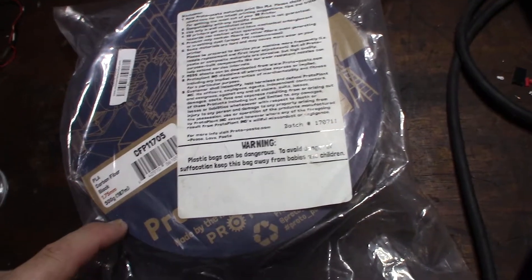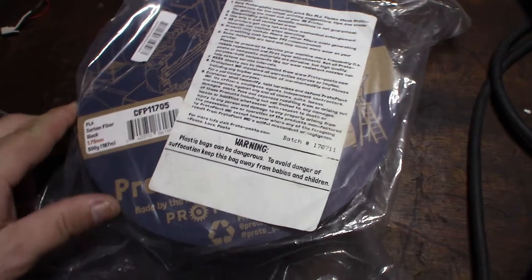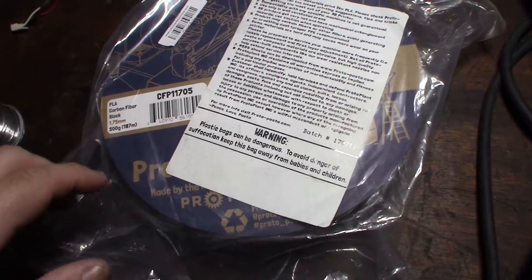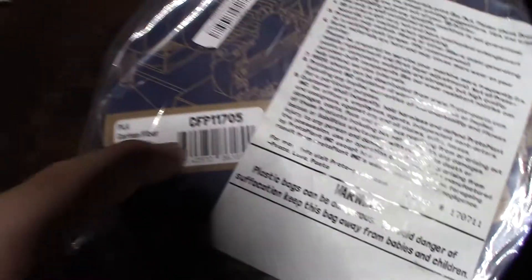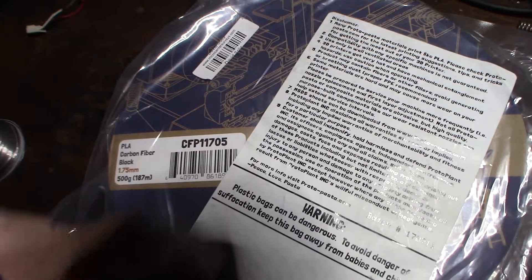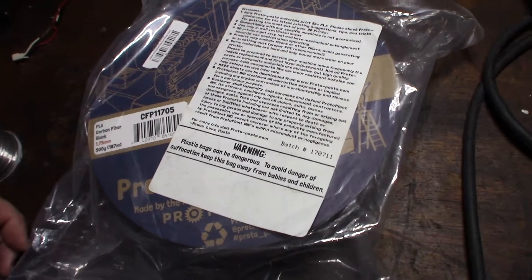And I was actually looking at the filament. I was in the filament aisle and I saw this stuff. It's pretty expensive. It's called Proto Pasta, carbon fiber black, part number CFP11705. But I guess it's a PLA infused with carbon fiber strands.